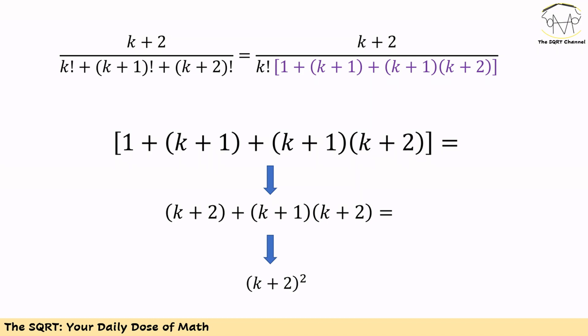After factoring out k factorial, the first term in the denominator becomes 1, the second term becomes k+1, and the last term becomes (k+1)(k+2).